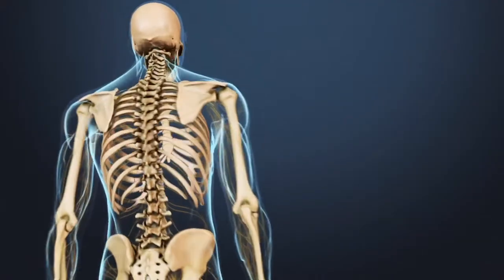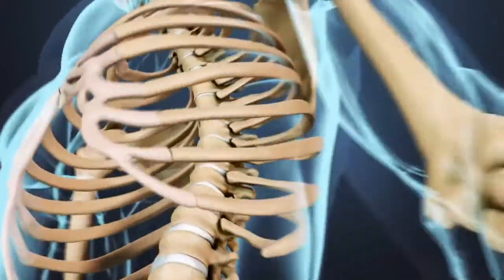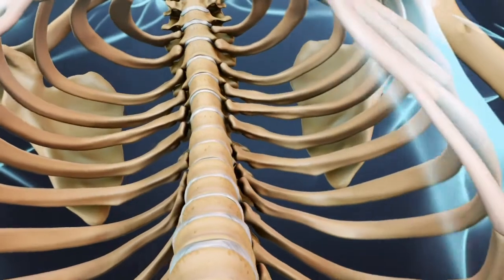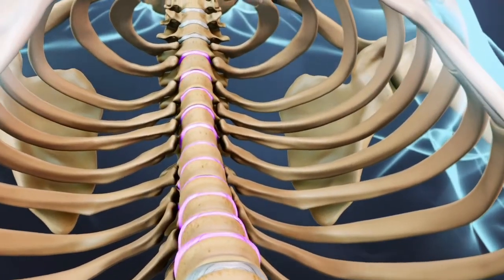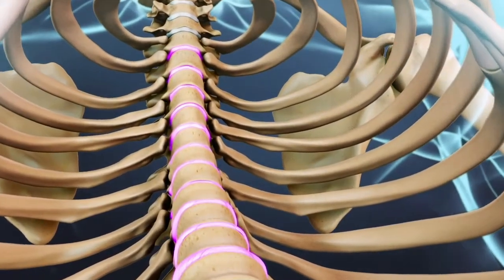A thoracic herniated disc occurs when a spinal disc in the mid-back ruptures. In the thoracic spine, or upper back, there are 11 spongy discs positioned between the bony vertebrae.